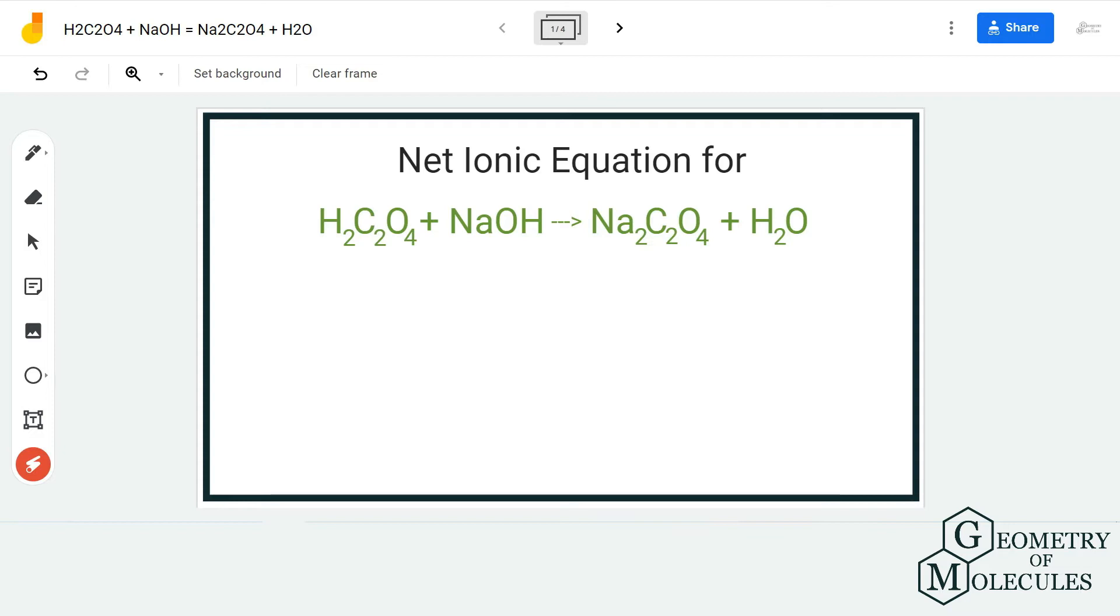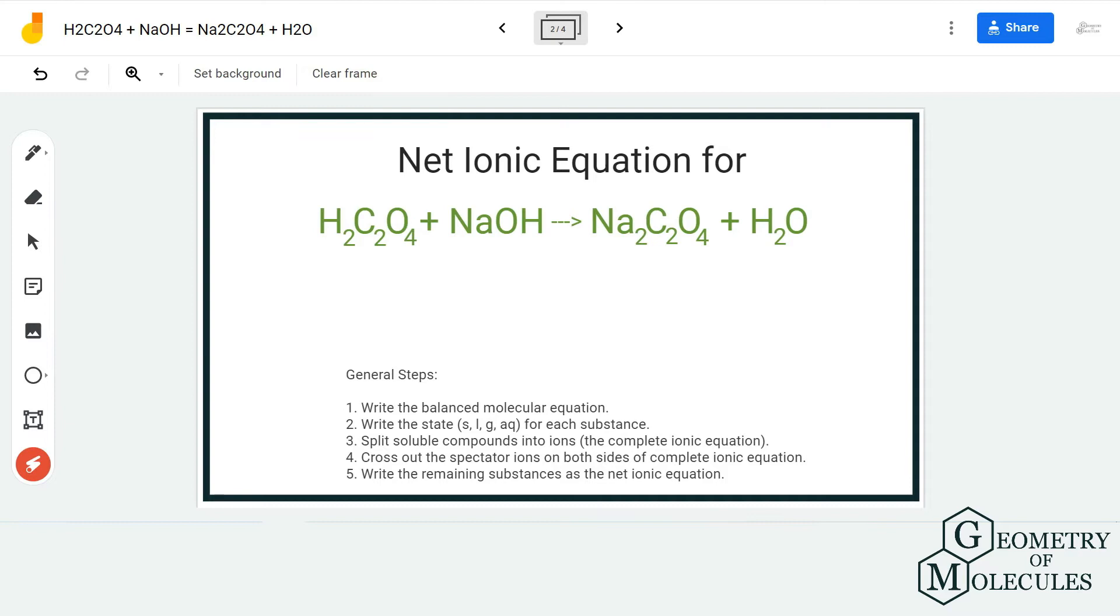So to find out the net ionic equation, the first rule that we follow is that we first balance this equation. So I am just going to add a coefficient 2 before NaOH and before H2O to balance this equation. Now if you check the number of atoms, it will be the same for both the reactant and product side.